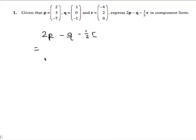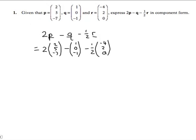And then just as we did before, there's now a substitution process. Two lots of these are the components of vector p, so we replace vector p with (2, 5, -7), take away vector q, so we replace q by (1, 0, -1), these three components. Take away a half of vector r, so vector r is (-4, 2, 0). That's our substitution process, just like we did with the numbers previously.